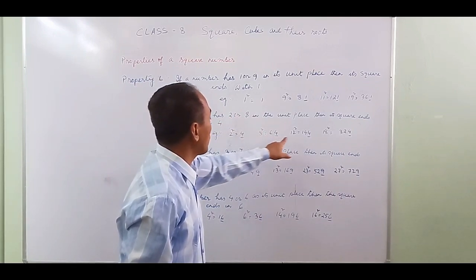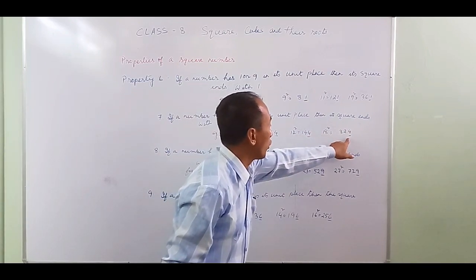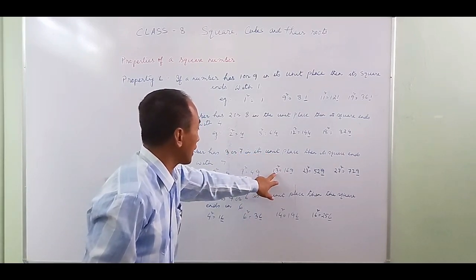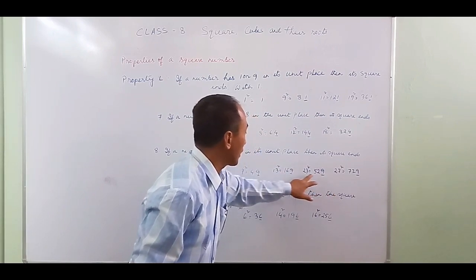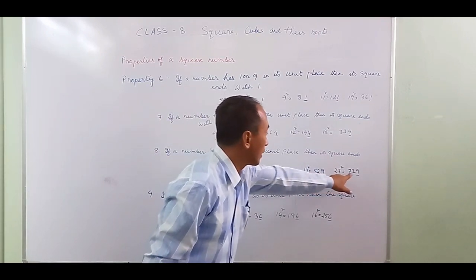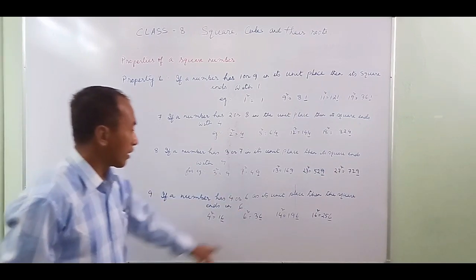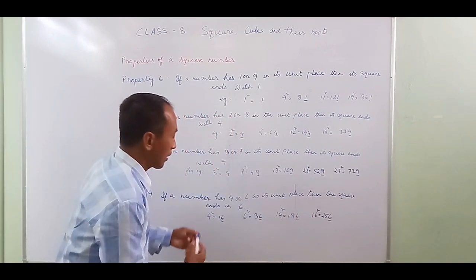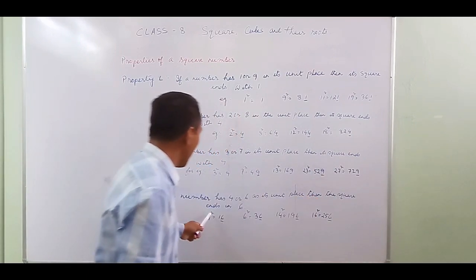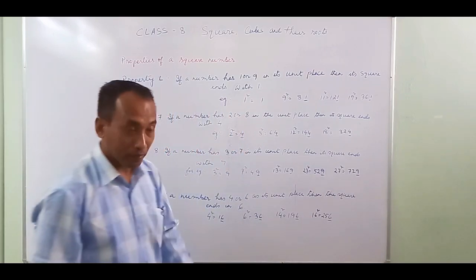If a number has 2 or 8 in the unit place, the square ends with 4. If a number has 3 or 7 in the unit place, the square ends with 9. If a number has 4 or 6 in the unit place, the square ends with 6. For example, 4 squared is 16 and 6 squared is 36 — both end with 6.